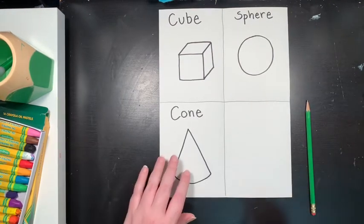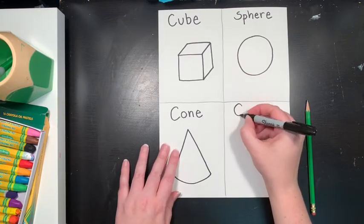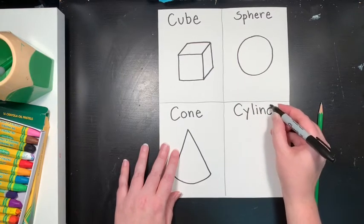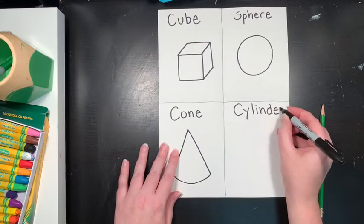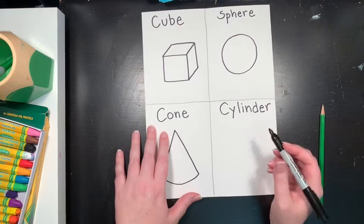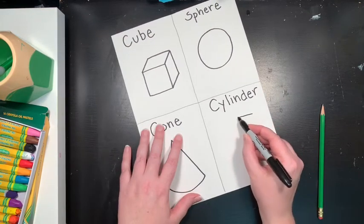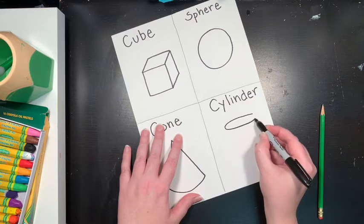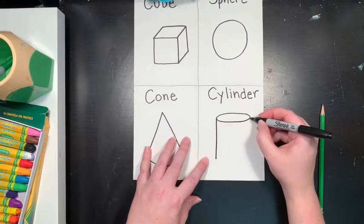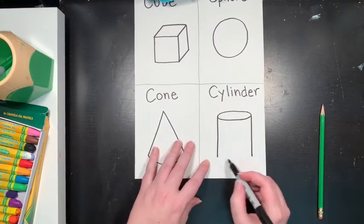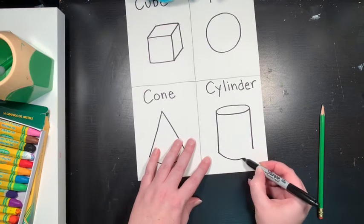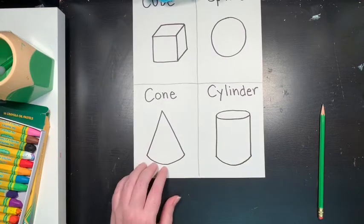All right, and the last one we're going to make is a cylinder. So it's C-Y-L-I-N-D-E-R. Cylinder. A cylinder is like a can, if you think of a can. So I'm going to start my cylinder with an oval like that. Then I'm going to do two straight lines coming down, stopping at about the same place. And then I'm going to do a smiley face line, curved line, connecting those together.